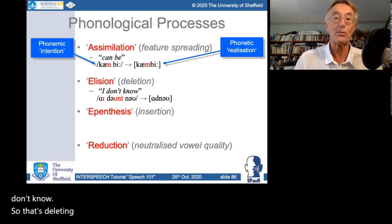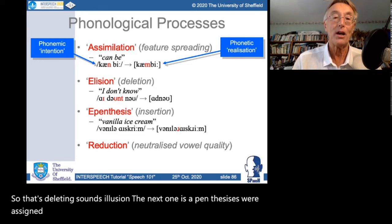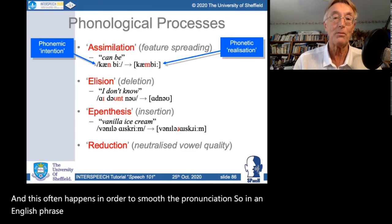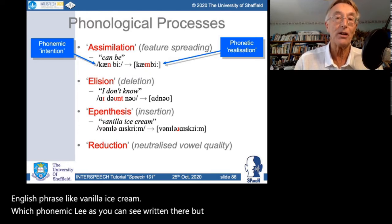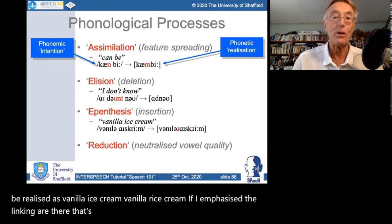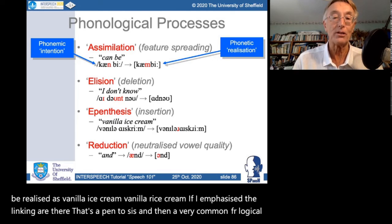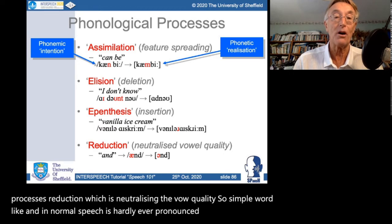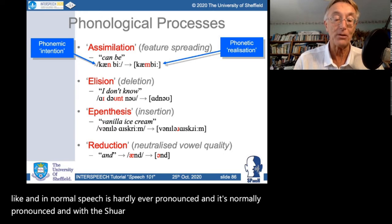The next phonological process is epenthesis — where a sound is inserted, often to smooth pronunciation. In English, a phrase like 'vanilla ice cream' might be realised as 'vanilla rice cream', with a linking R inserted. And a very common phonological process is reduction — neutralising the vowel quality. A simple word like 'and' in normal speech is hardly ever pronounced /ænd/; it's normally pronounced /nd/ with a schwa vowel. Vowels are often neutralised in this way.